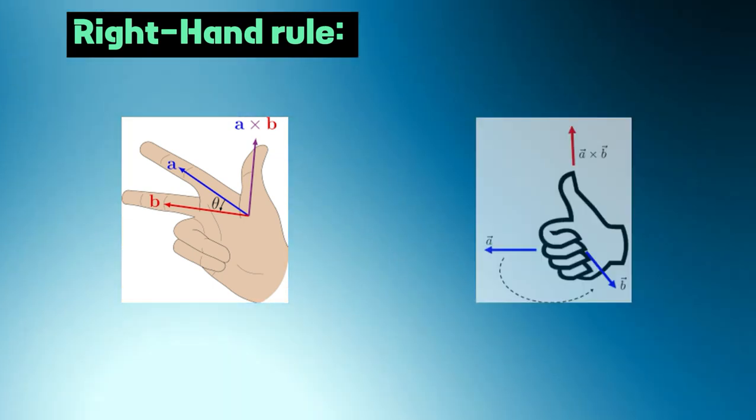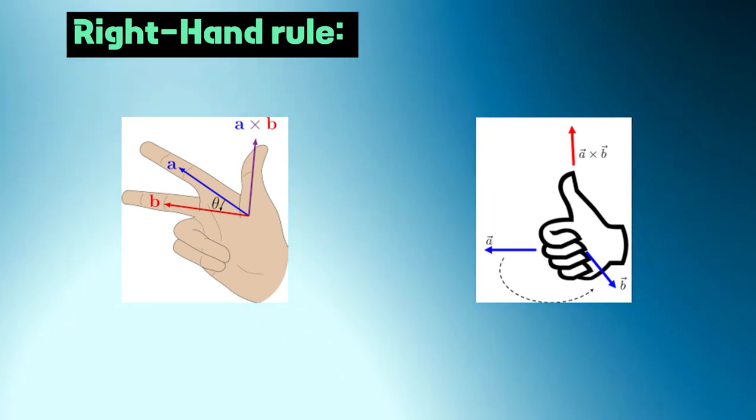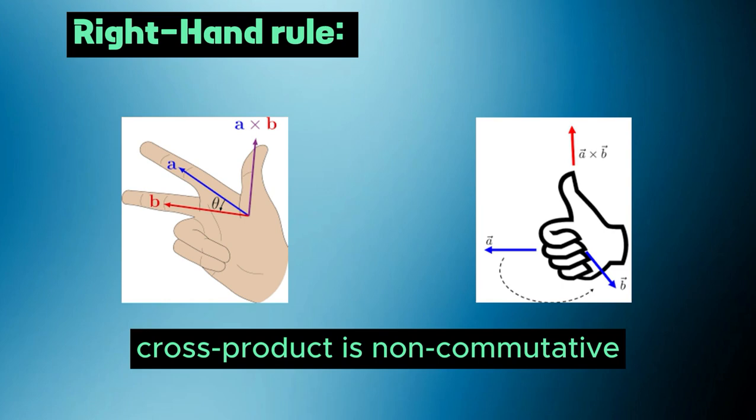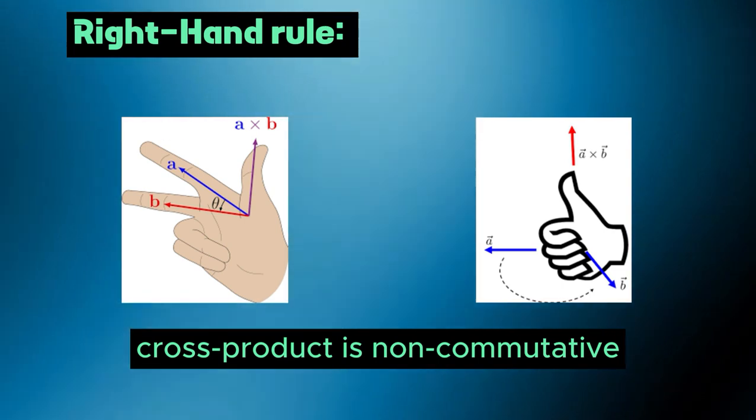In another way we can understand it. If you put your right hand at the edge of vector b and curl your fingers in the direction of vector a, the direction of thumb will represent the unit vector or cross product. With the help of the right hand rule, we can easily show that vector's cross product is not commutative.